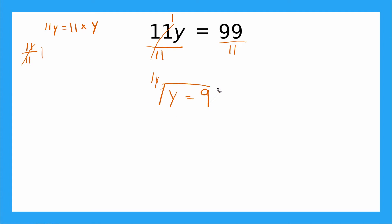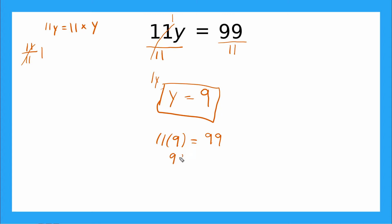Let's check it with substitution. I'm going to plug in nine for y, so I have 11 times nine equals 99. Is that true? 11 times nine is 99, and 99 equals 99. That checks out.